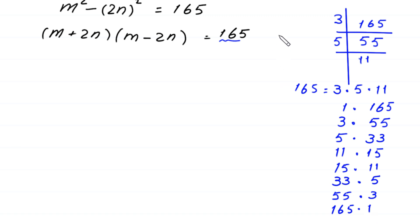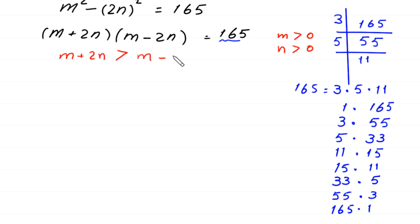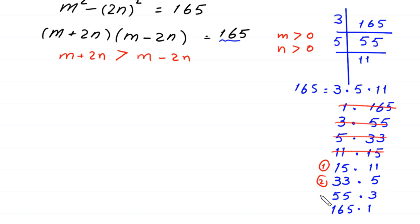Because m is greater than 0 and n is greater than 0, the value (m plus 2n) is greater than (m minus 2n). So the cases where the first factor is smaller than the second are rejected. We are left with only these 4 cases: Case 1 is 15×11, Case 2 is 33×5, Case 3 is 55×3, and Case 4 is 165×1.